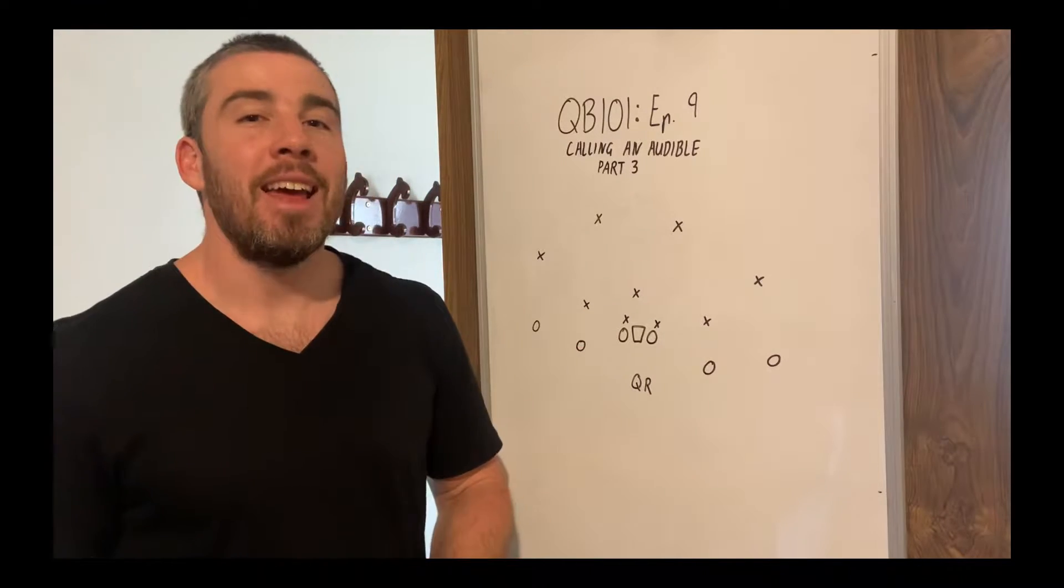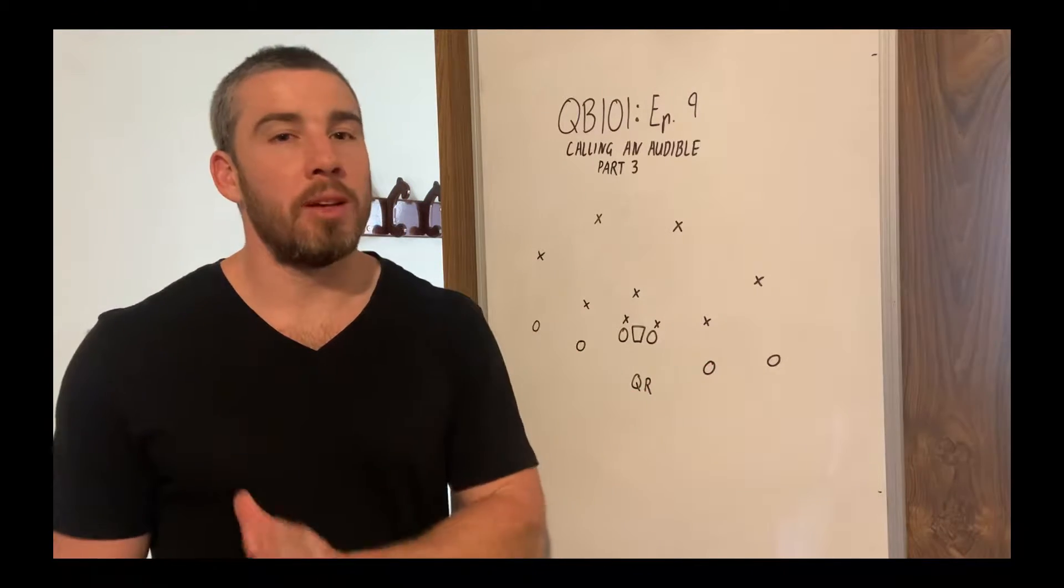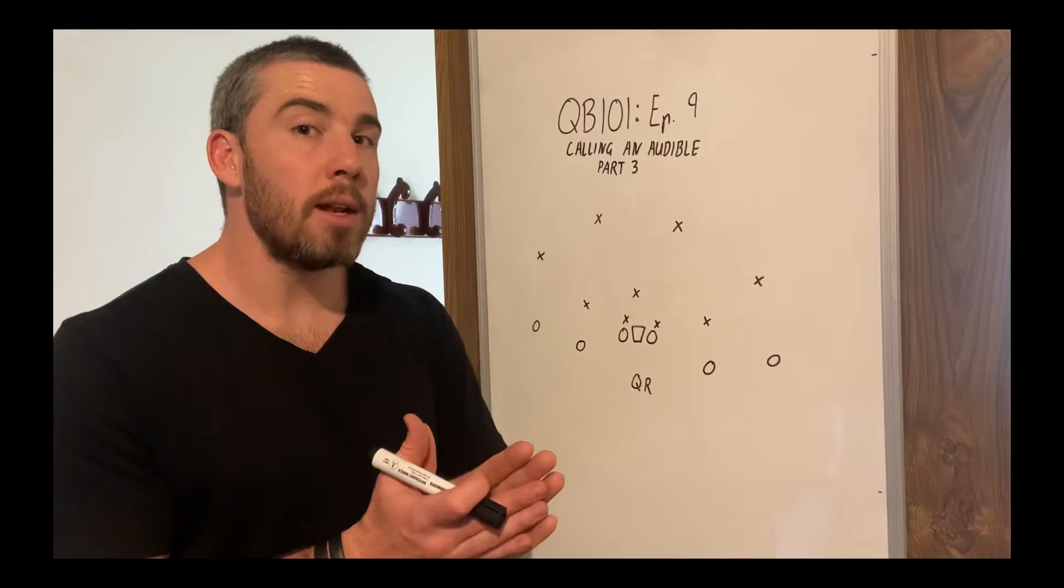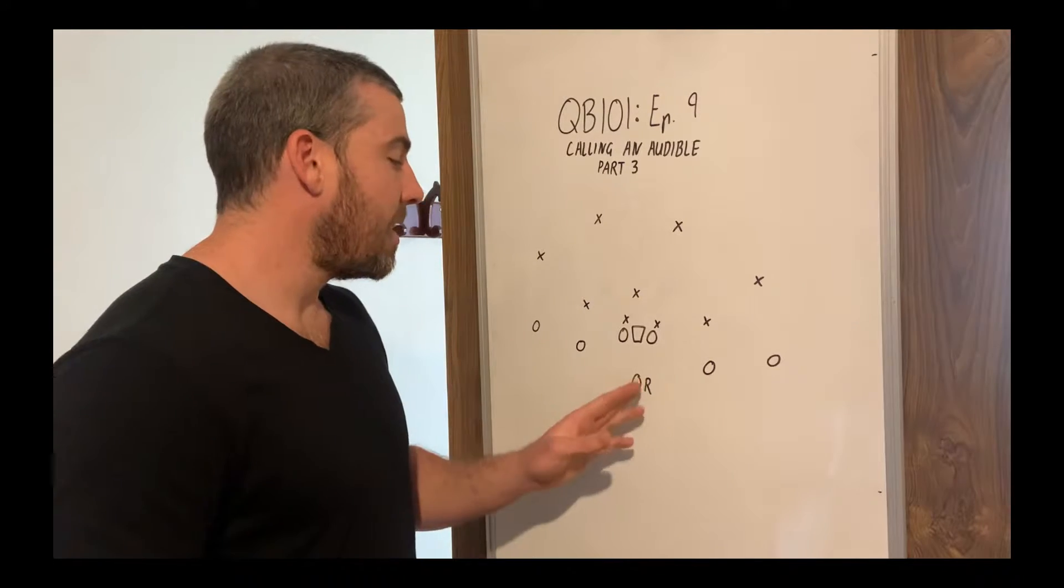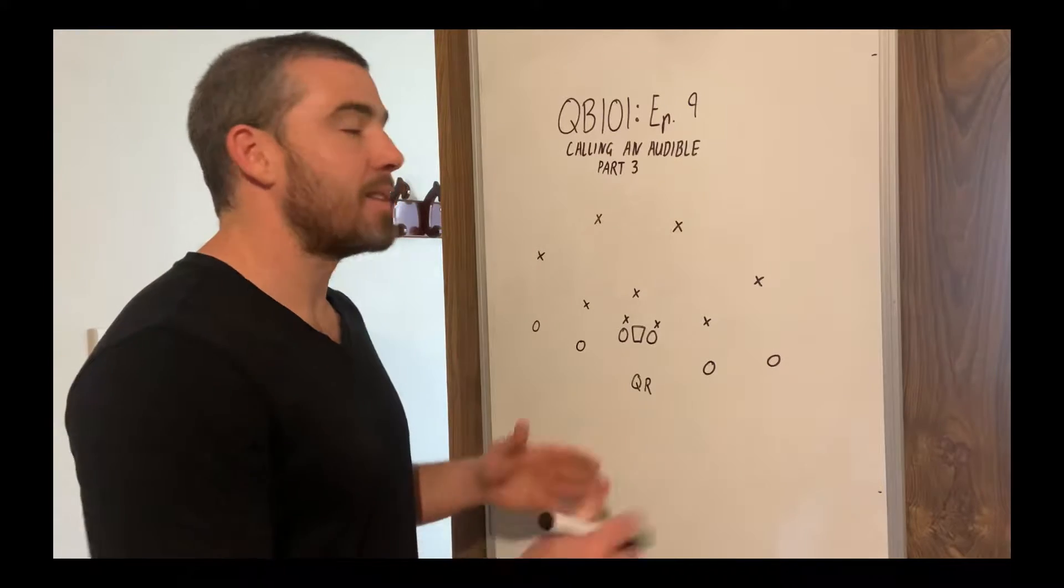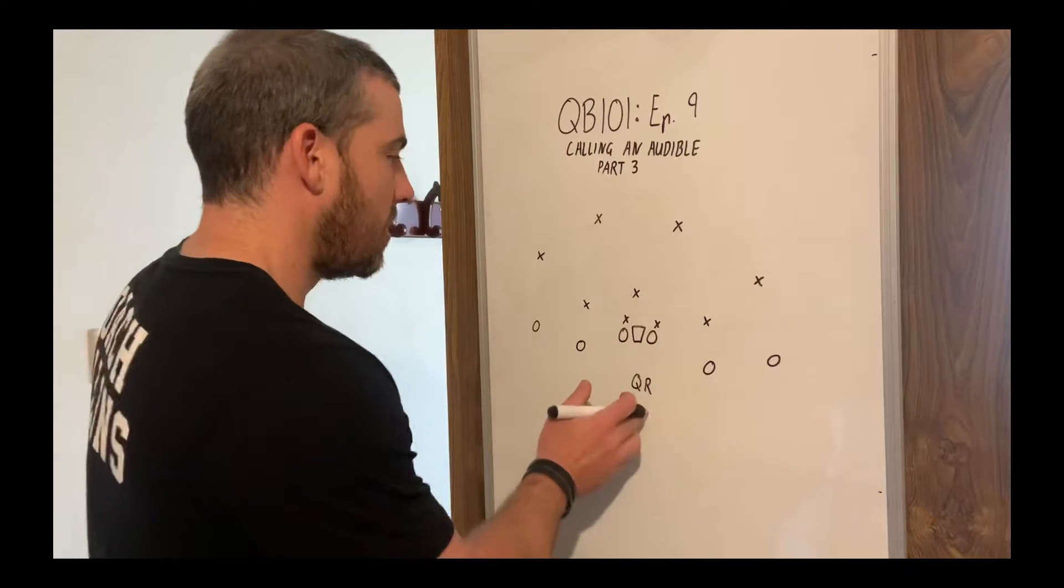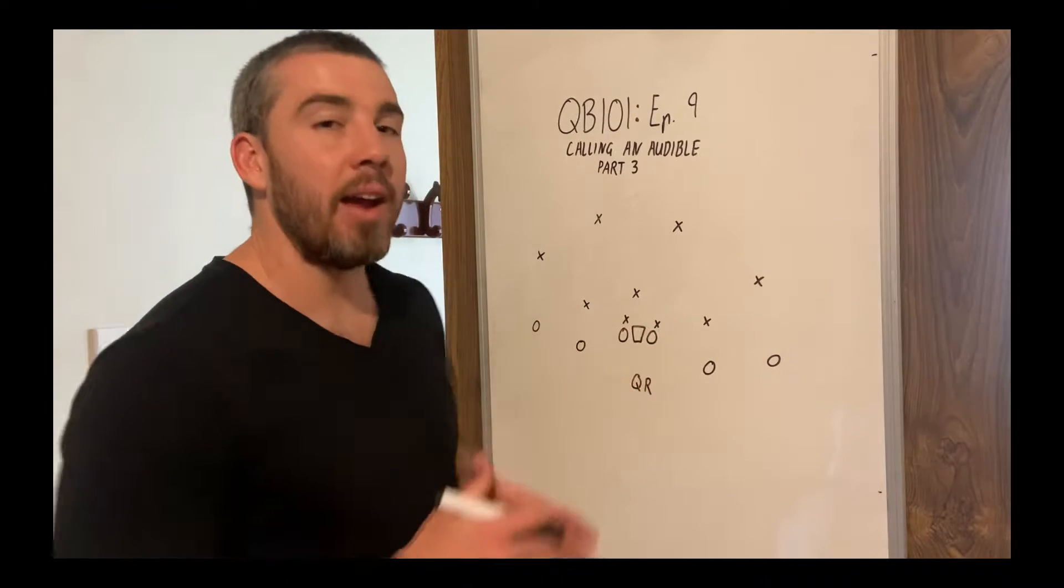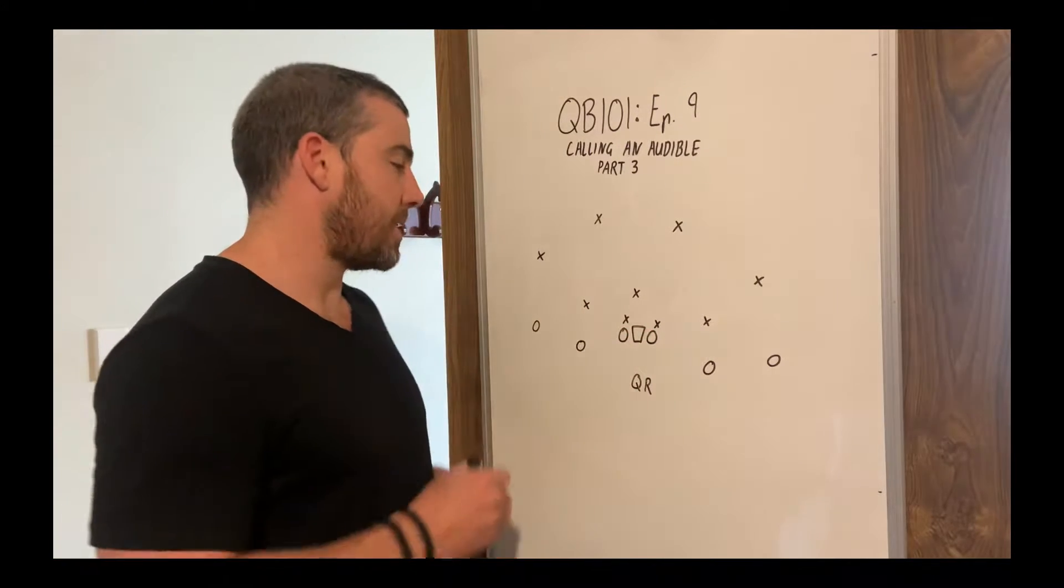So we're talking about checking into a run play. The first one we're going to talk about is a straight run. It could be a dive, it could be inside zone, whatever is your go-to run, your inside run. That's what we're checking to. So let's say it's a dive left. Why will we check into a dive left? Well, it's all about having favorable numbers in the tackle box.